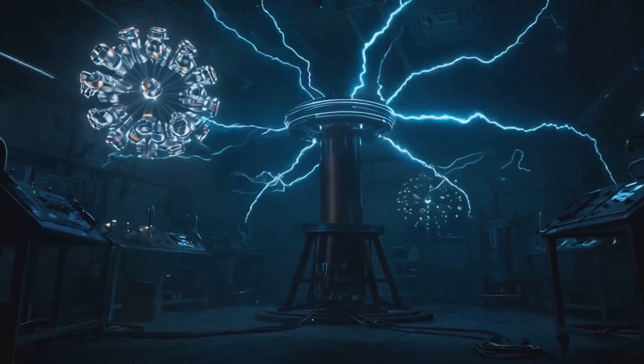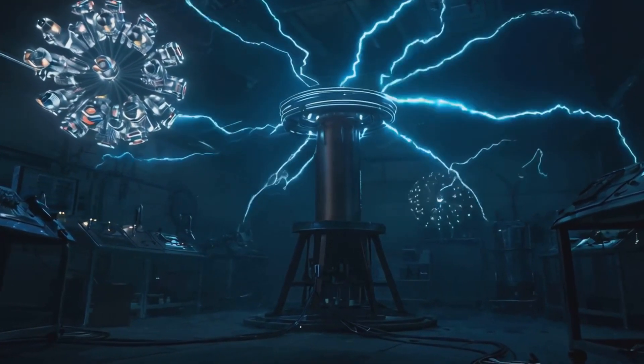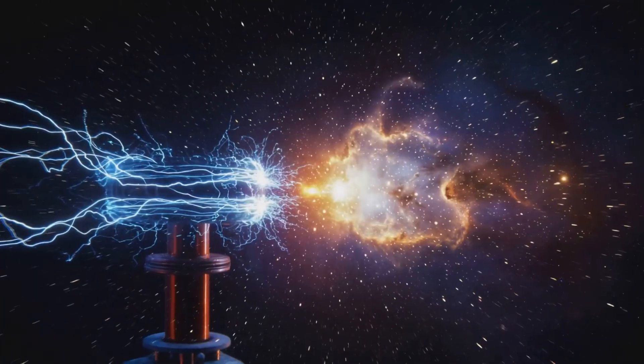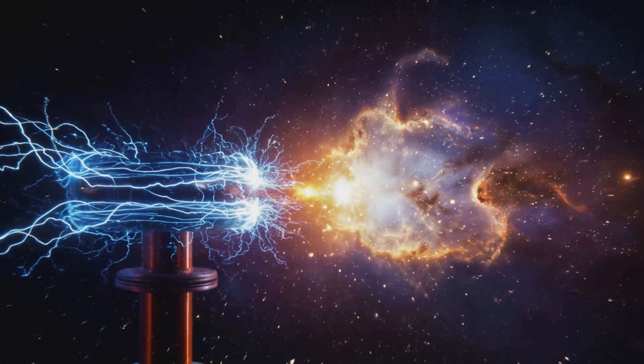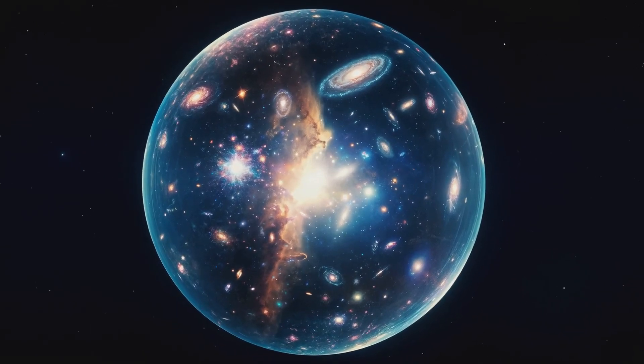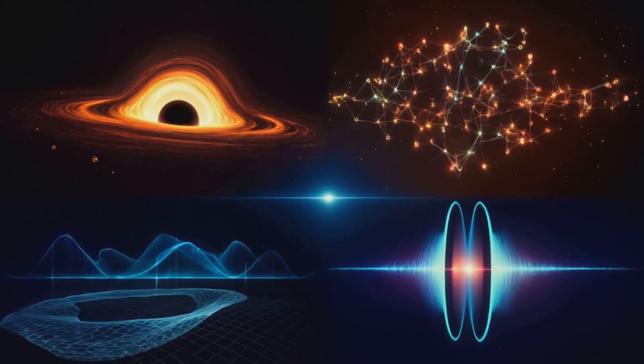Imagine the singularity as the primary coil of a Tesla coil, where all possible angular frequencies are wound together tightly. It emits these frequencies like a cosmic quantum radio station broadcasting through the medium of space-time. The event horizon is where this broadcast is received.